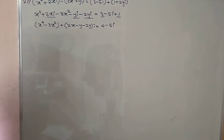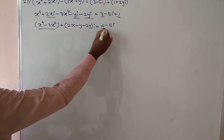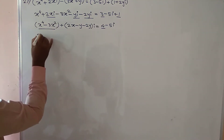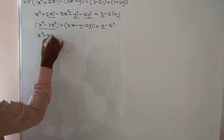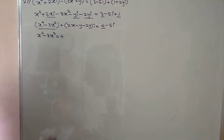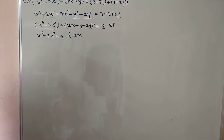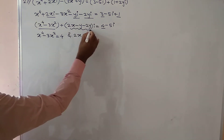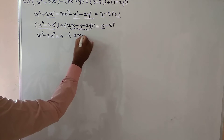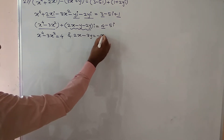By equality of complex numbers, real parts are equal and imaginary parts are equal. So considering real parts: x⁴ - 3x² = 4. And for imaginary parts: 2x - y - 2y = 2x - 3y = -5.